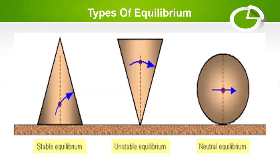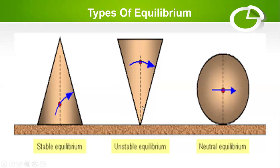Looking at the diagram, for stable equilibrium — if you rotate this triangle to one side, the body will remain stable since there will be displacement from its original position but it will return to a position of stability after the center of gravity is raised. For unstable equilibrium, when you rotate this body it does not return to its original position — the triangle falls to the other side and does not return.